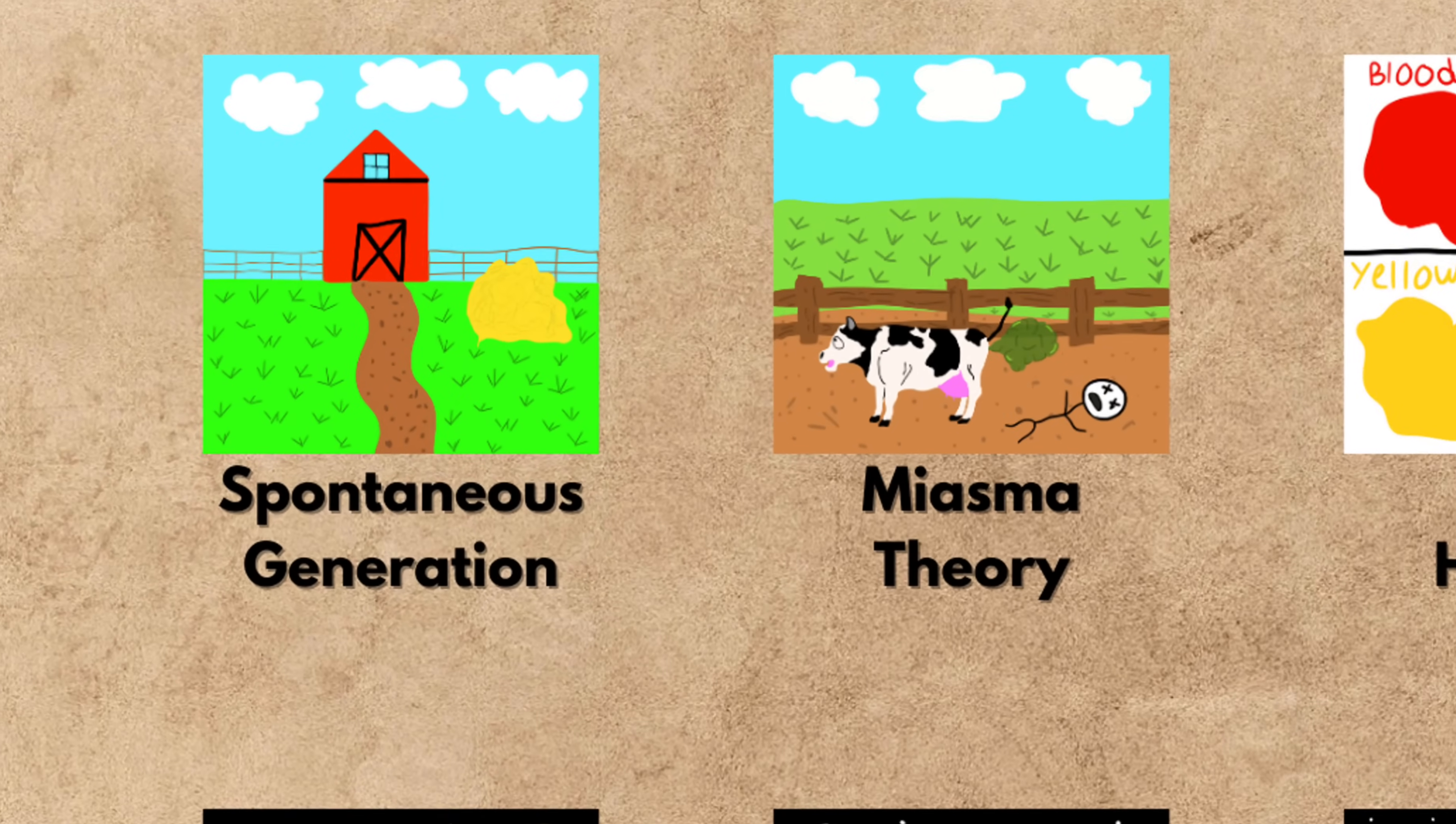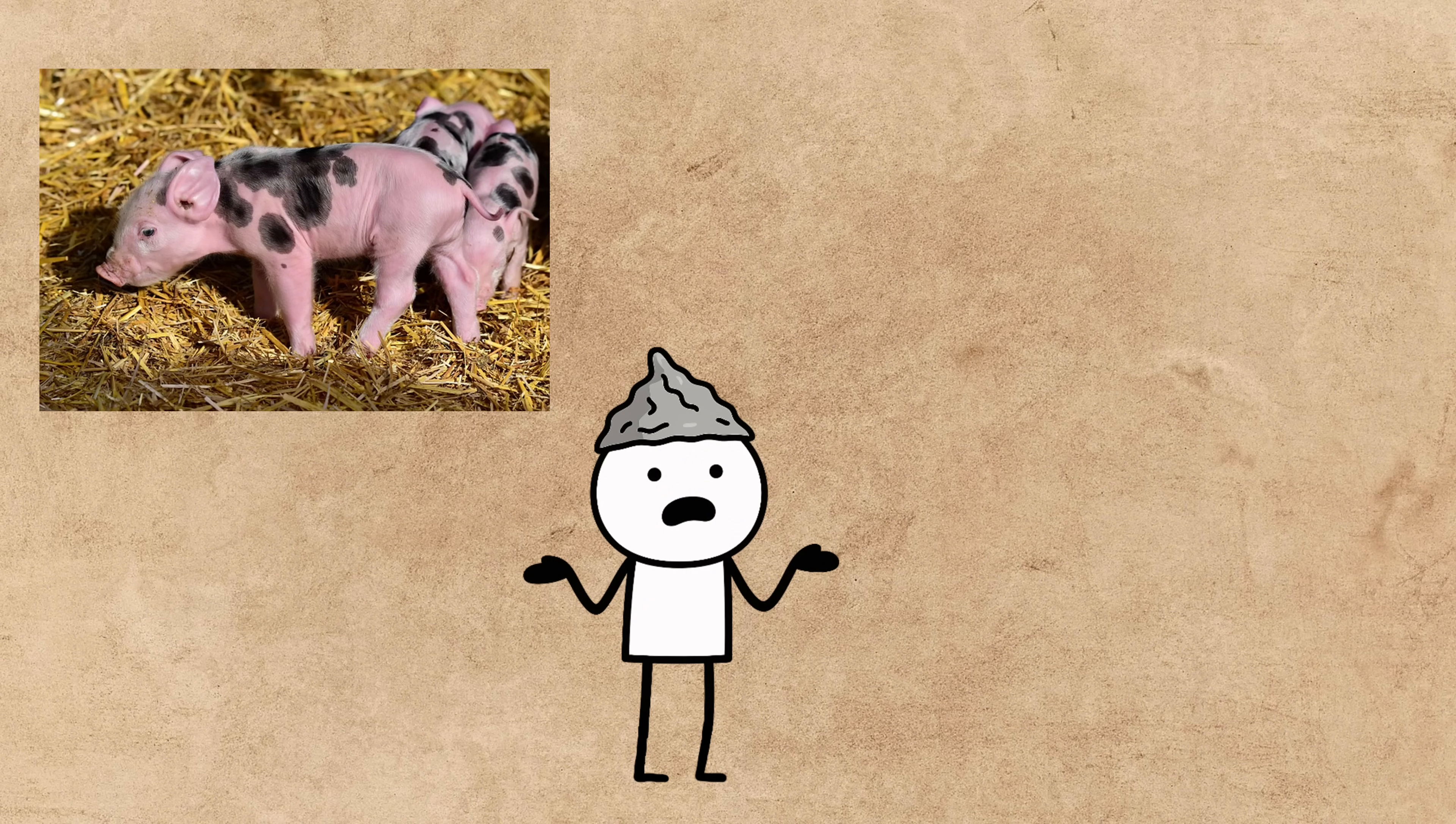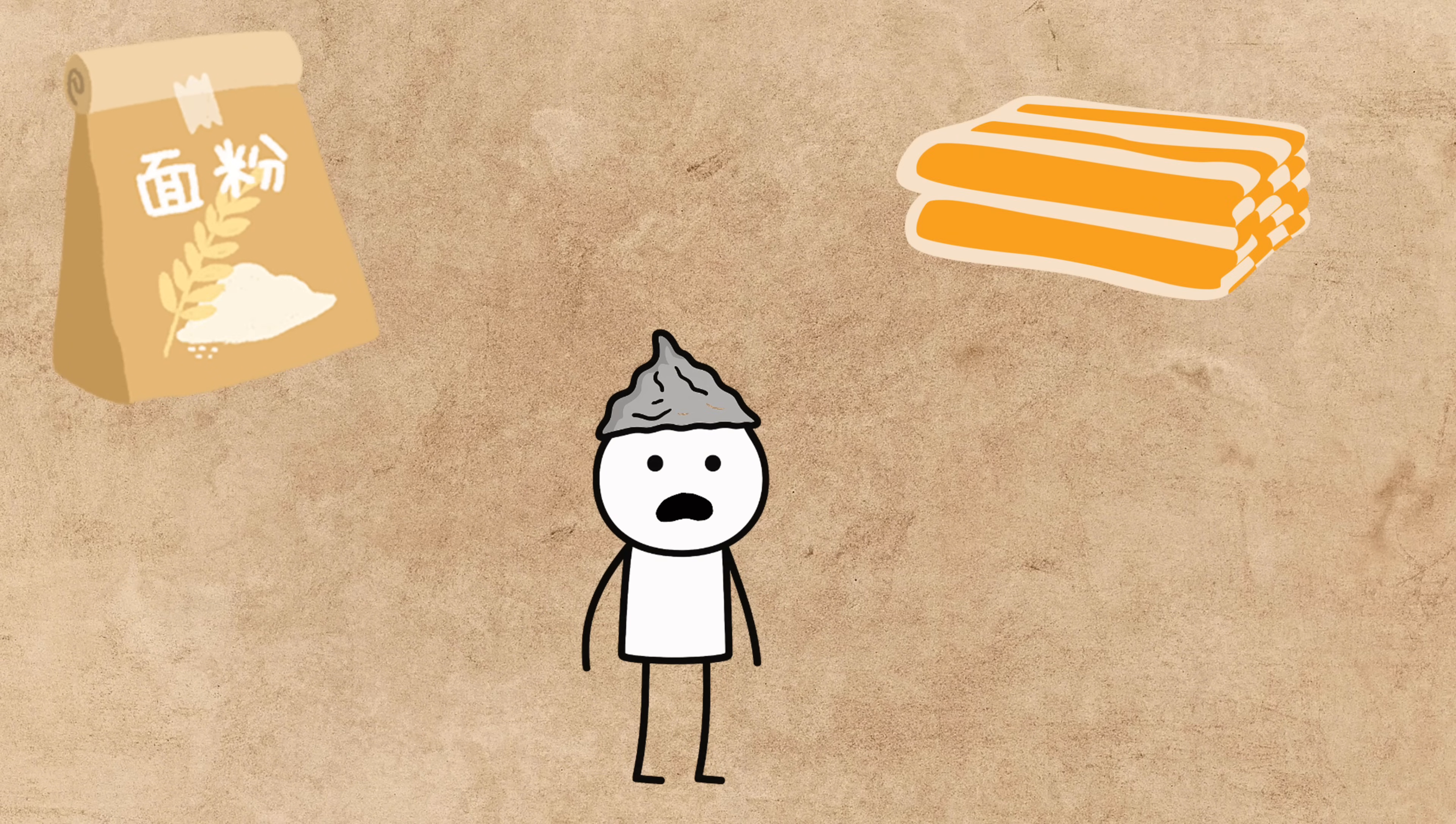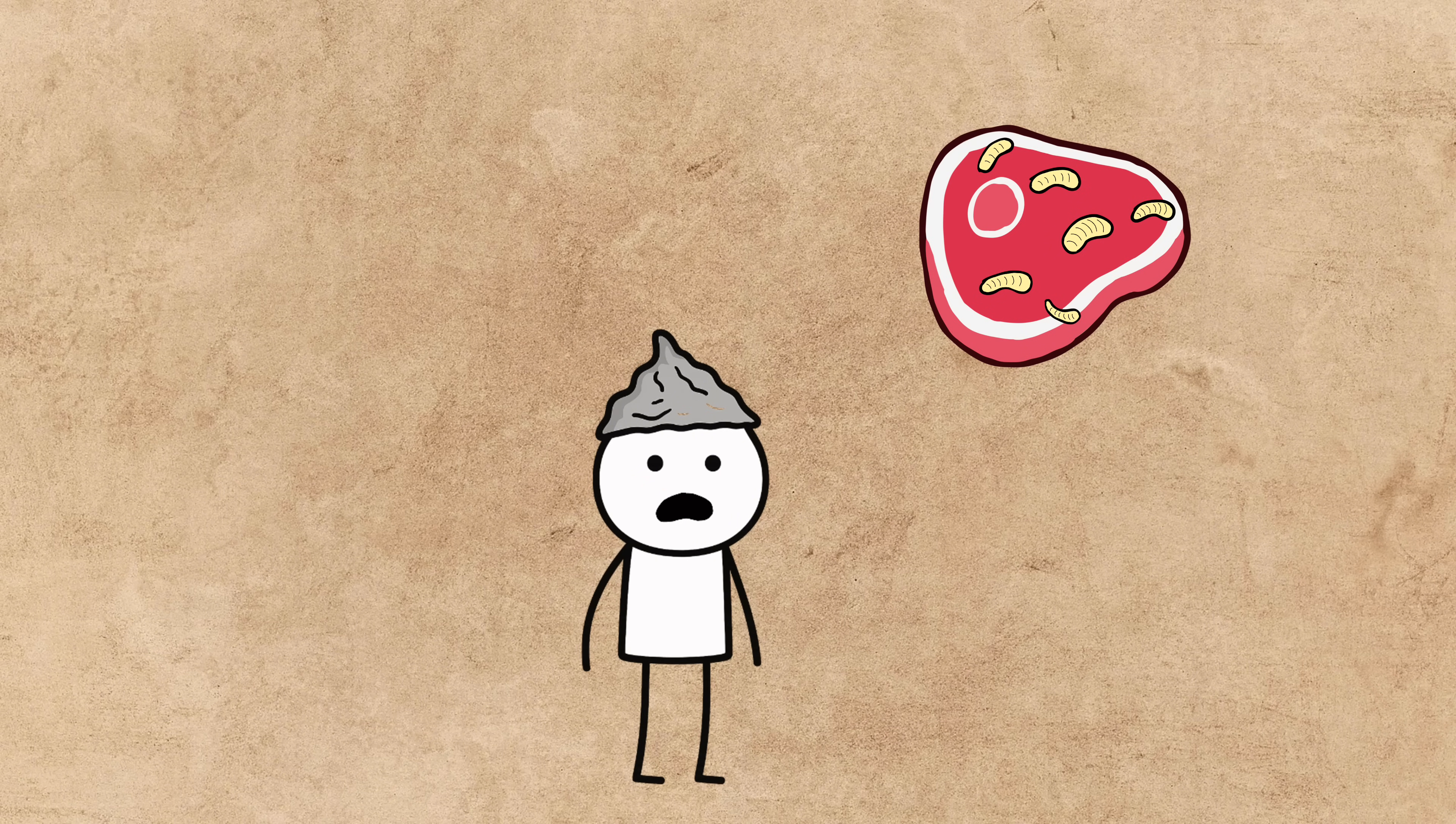First up is the wonderfully bizarre theory of spontaneous generation. For the better part of 2,000 years, it was just accepted scientific fact that life could appear out of non-living stuff. Got a pile of old, dirty rags and some wheat in a corner? Don't be surprised if you come back in a few weeks and find a family of mice has just generated. Got some rotting meat? Well, that's just a maggot factory waiting to happen. And this wasn't some old wives' tale.